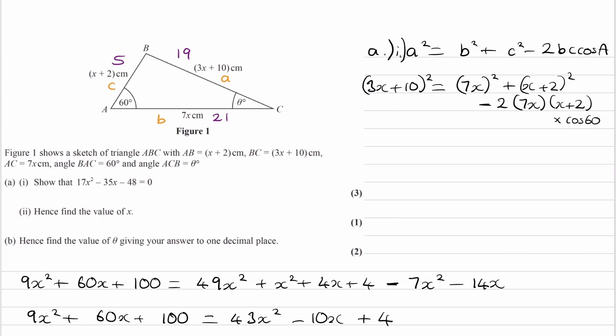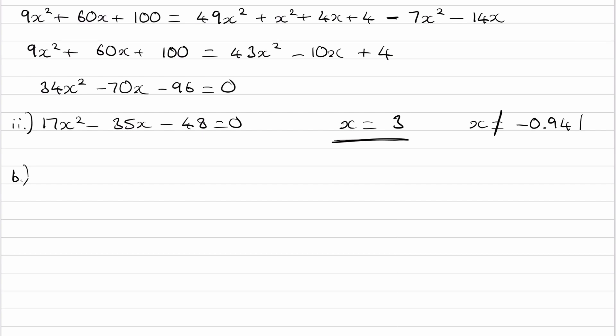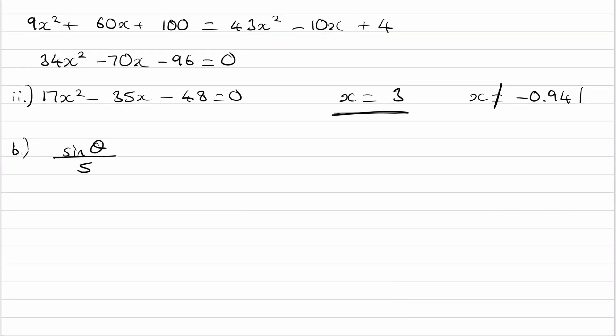So now we can actually use the sine rule. So sine theta divided by, so here is sine theta. 5 is the opposite side. So sine theta over 5 is equal to.